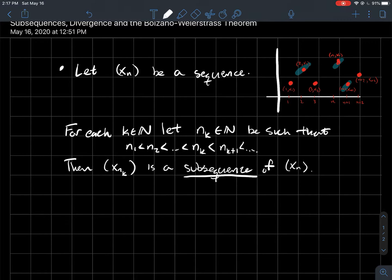The point then is, if I take all the terms in my sequence whose index is one of these nk's, and there's a lot of circles going on there, just whose index is one of these nk's now, then that's a subsequence of xn.